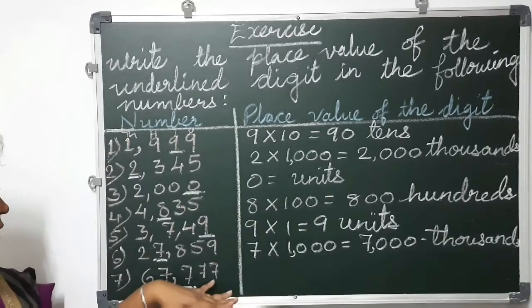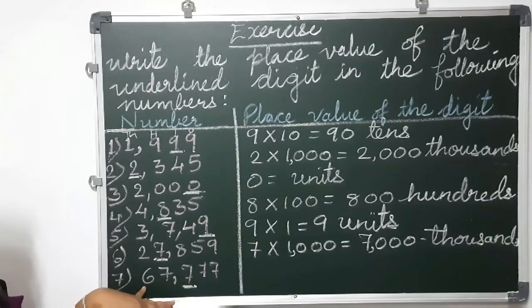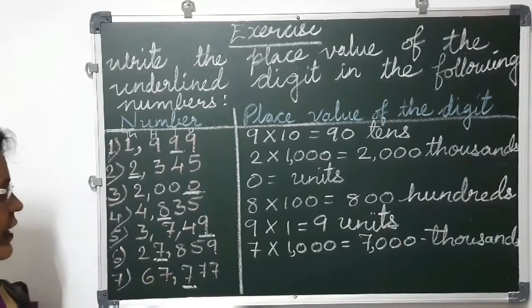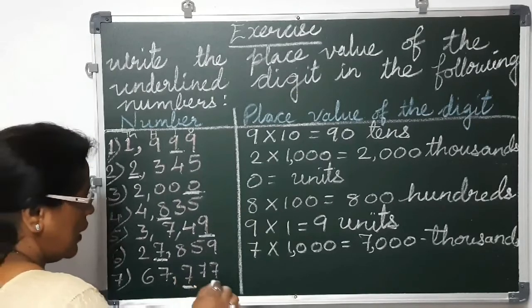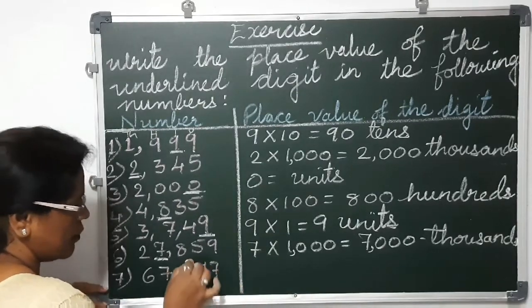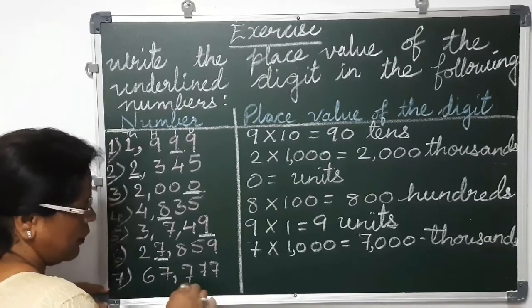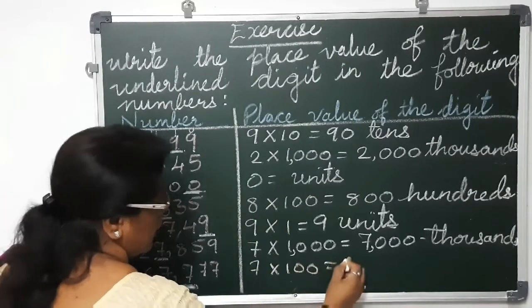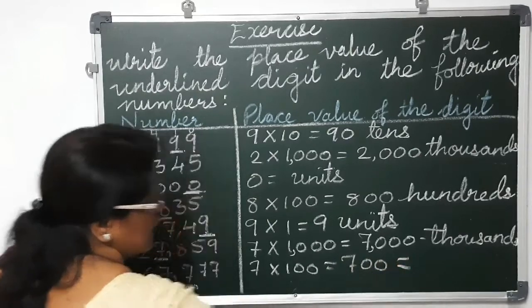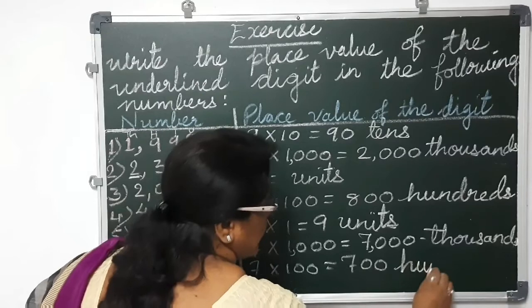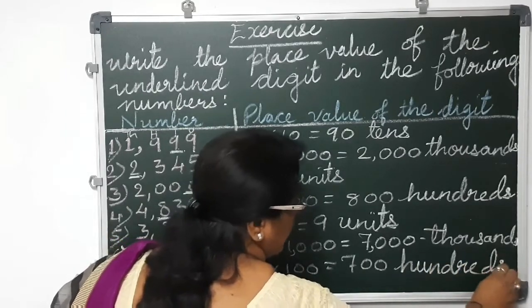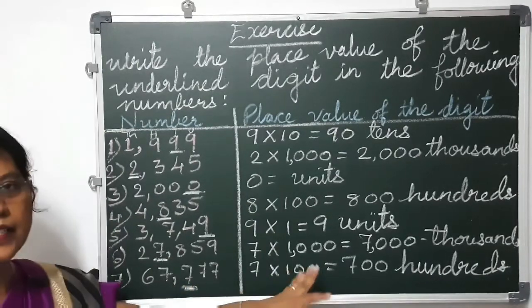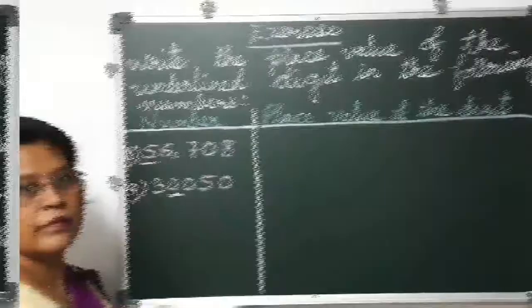Now the seventh one: 7, 7, 7, 7 and 6 — the number is 67,777. The underlined digit here is 7. Leaving units, tens — this 7 in hundreds place value: 7 into 100 equals 700, and the place value is hundreds. So 7 is in hundreds place.